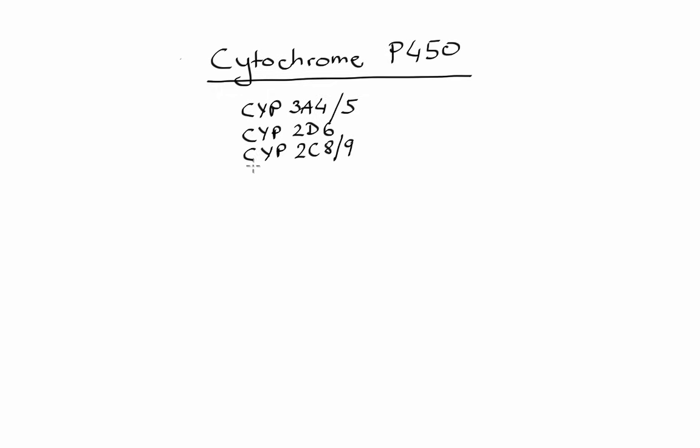This large family of enzymes is essential for the metabolism of drugs. Although I wouldn't recommend anyone to memorize all of them, there are a few that are worth remembering, because they catalyze the vast majority of phase 1 reactions. These are: CYP3A4 and 5, CYP2D6, CYP2C8 and 9, and CYP1A2.